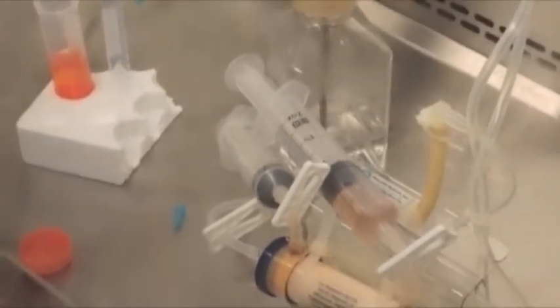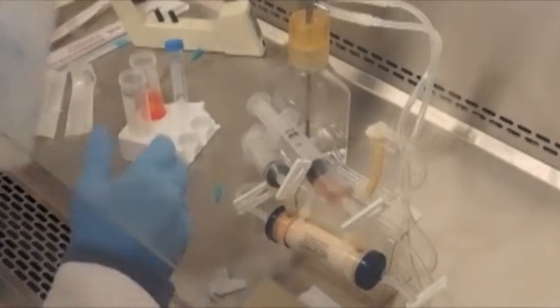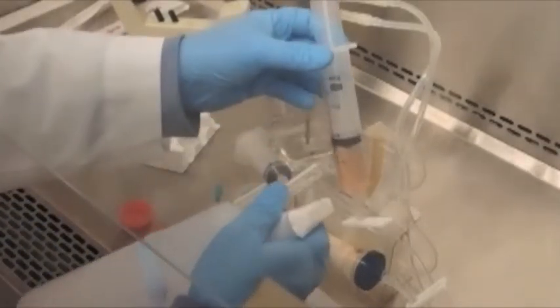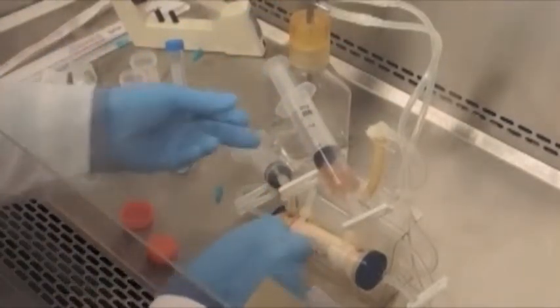We're going to collect our product into a 50 mil conical tube. I want to be sure to spin it down—there will be some cells contained in here but not a lot. This is not designed to remove cells but to give us our most concentrated product.